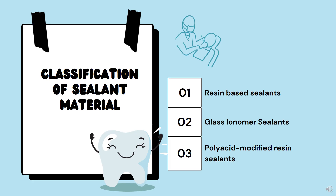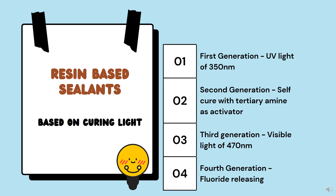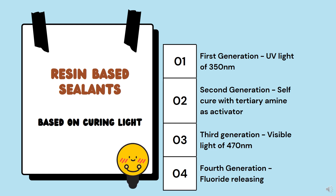Moving on to the classification of sealant material: resin-based sealant, glass ionomer sealant, and polyacid-modified resin sealant. Resin-based sealants are classified into four generations based on curing light. First generation: UV light at 350 nanometers. Second generation: self-cure with tertiary amine as activator. Third generation: visible light at 470 nanometers, range 430 to 490 nanometers. Fourth generation: fluoride releasing — the most commonly used, as fluoride has anti-caries properties. Third generation is also commonly used.